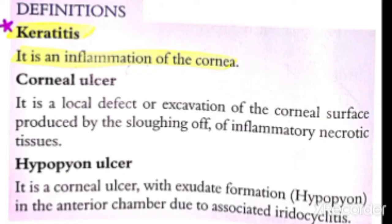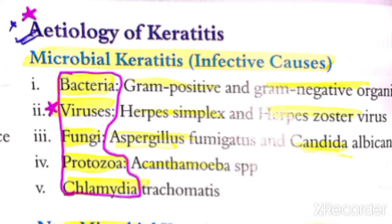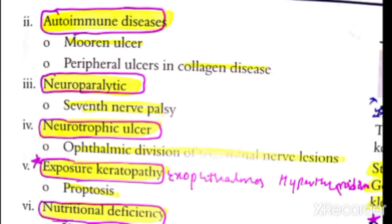Now let's look at the causes of keratitis - inflammation of the cornea. Causes can be microbial or non-microbial. Microbial causes include infection by bacteria, fungi, viruses, protozoa, and chlamydia (atypical bacteria, studied separately). Non-microbial causes include conditions where there is no infection - other causes that lead to corneal inflammation.